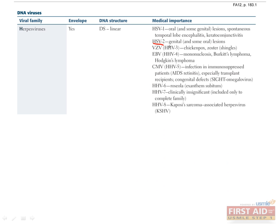Herpes simplex virus 2 is transmitted by sexual contact and most infections are asymptomatic. HSV-2 may present with vesicular ulcerating lesions of the genital or perianal areas. Remember that HSV-2 is one of the TORCH infections and can affect neonates via transplacental transmission or during delivery. Caesarean section is indicated for mothers with active HSV infections. HSV-2 remains latent in sacral ganglia and can reactivate under stressful conditions, resulting in genital lesions.